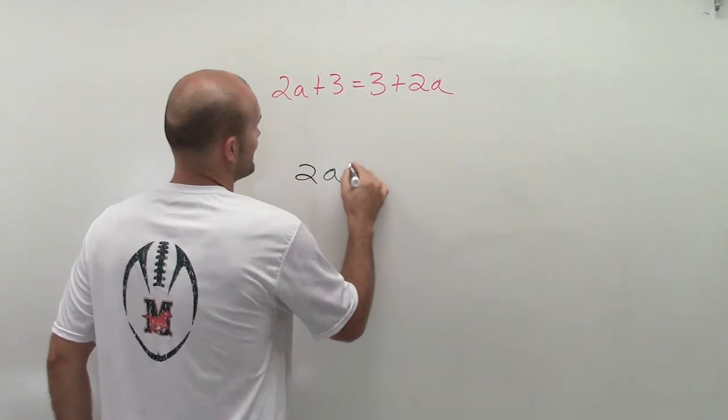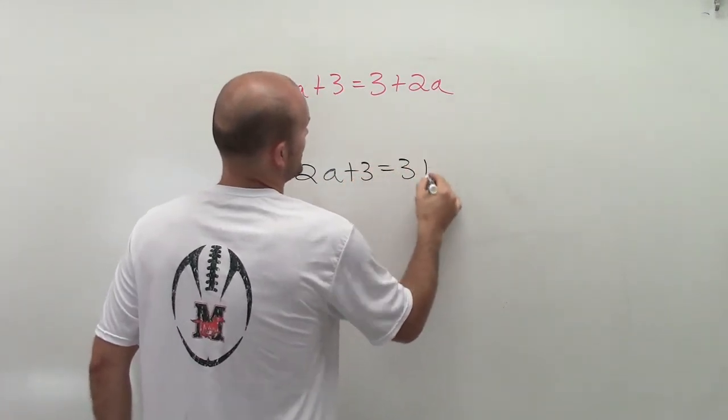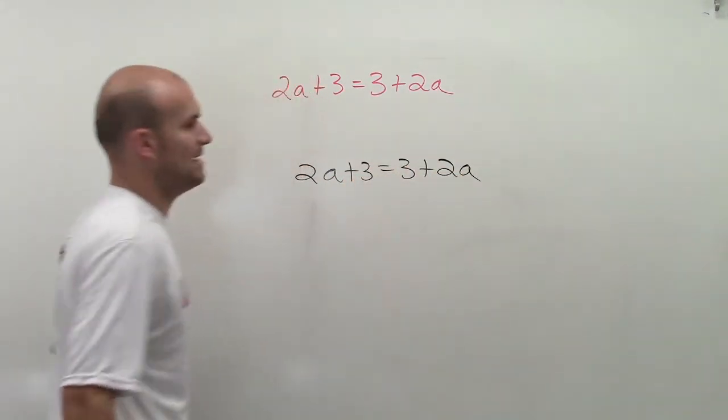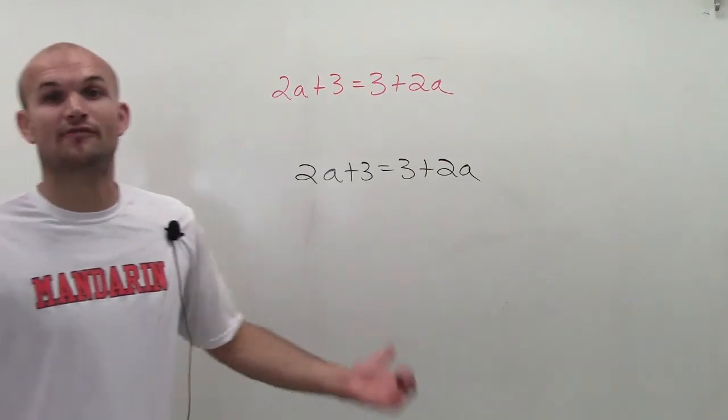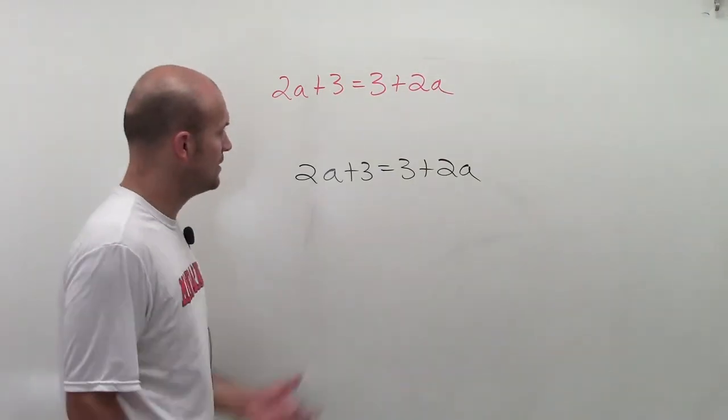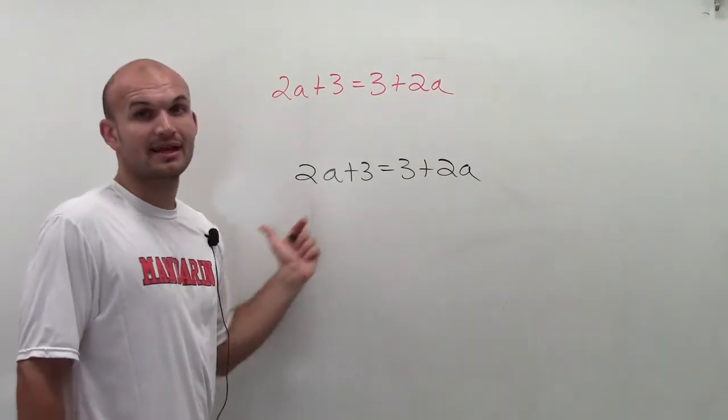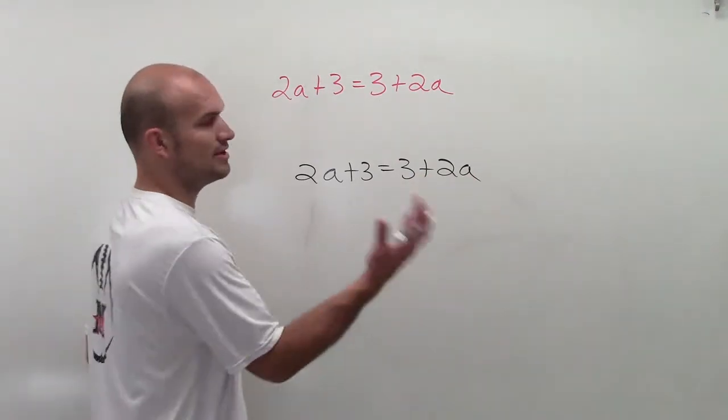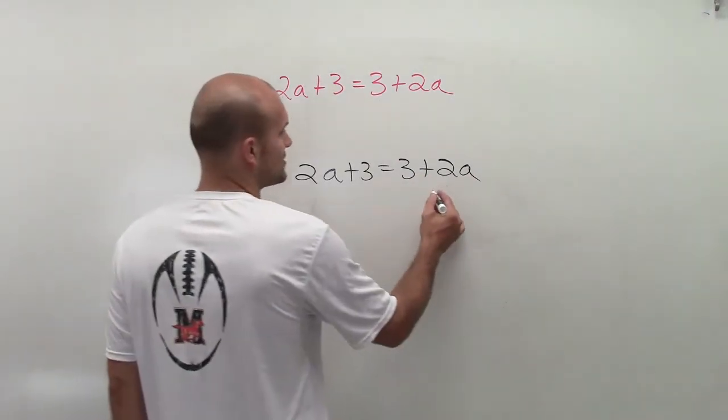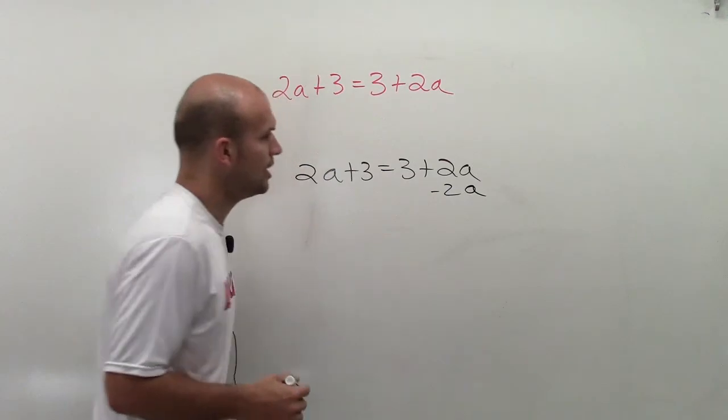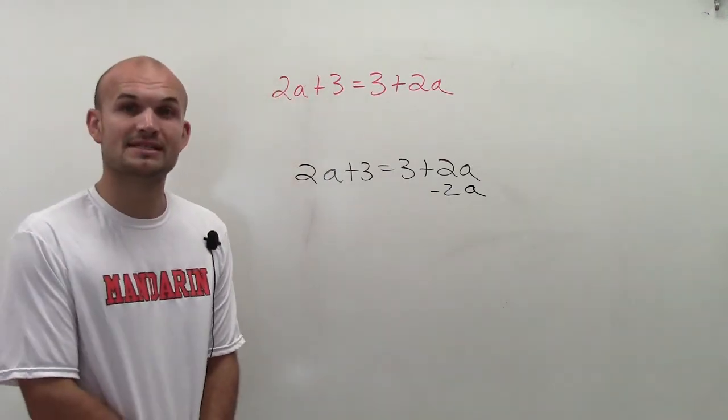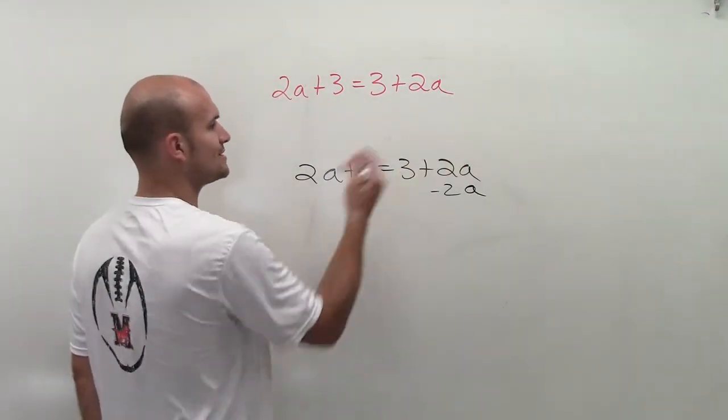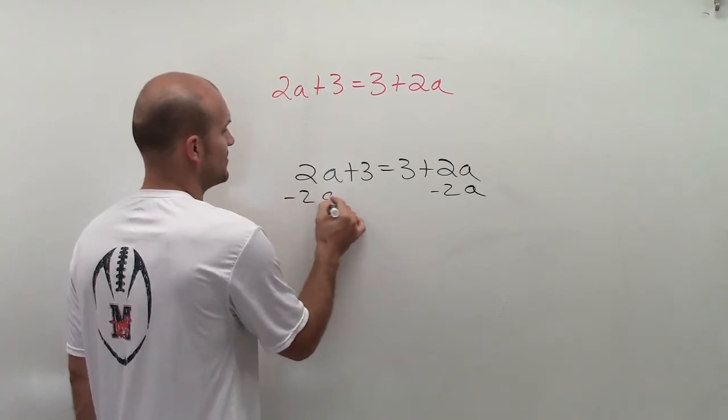We have 2a + 3 = 3 + 2a. The main important thing we need to do is get our variables on the same side. I can either pick to get the variables on the left side or the right side. It doesn't really matter since they're both positive. I'll eliminate the variable on the right side by subtracting 2a. Since I subtracted 2a on the right side, I need to subtract 2a on the left side.